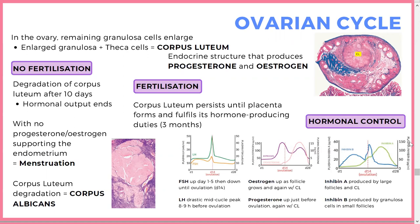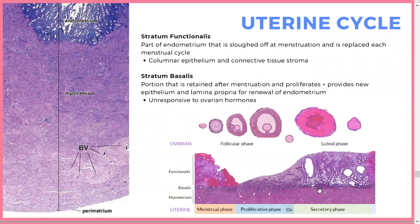Inhibin A peaks toward ovulation and while the corpus luteum is present. Inhibin B is produced by the granulosa cells while follicles are growing, then surges at ovulation and ends because granulosa cells are no longer active. These hormonal changes have an effect on the uterine cycle.